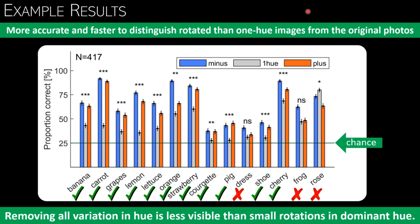Response times confirmed these results. And since the hue rotations were so tiny, also compared to the discrimination thresholds, these results support the idea that observers could barely see the difference between original and one hue images.